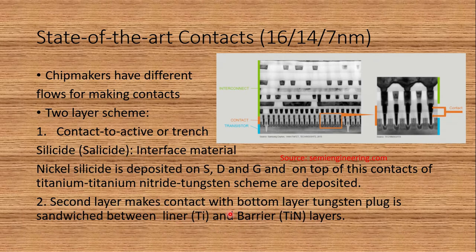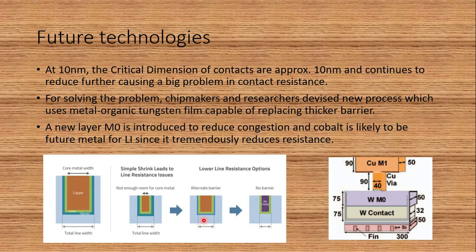It's not always titanium — other metals such as tantalum or ruthenium can be used; these are called refractory metals. At 10nm, the critical dimension of the contact is approximately 10nm, and as we go to more advanced nodes it will continue to reduce, causing a big problem with contact resistance. To solve this, chip makers and researchers are devising many approaches, including a new process using a metal-organic tungsten film capable of replacing a thicker barrier.